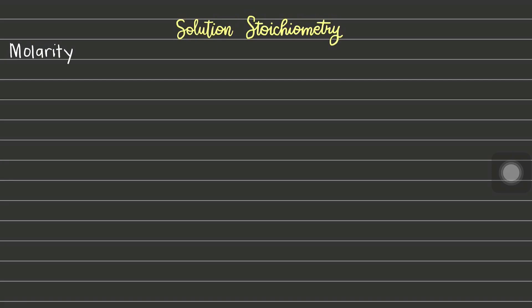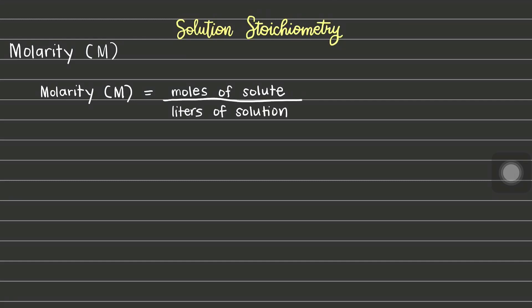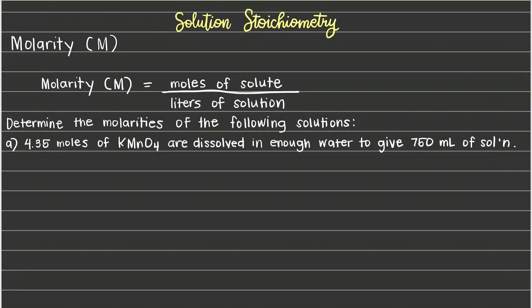Our next method for specifying solute concentration is molarity. Molarity is defined as the moles of solute in a solution divided by the liters of solution. Let us apply this formula to the following problem. Determine the molarity of this solution: 4.35 moles of potassium permanganate are dissolved in enough water to give 750 mL of solution. We are given 4.35 moles of solute and 750 mL as the volume of solution.